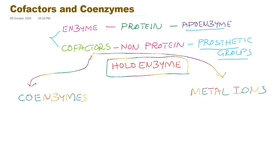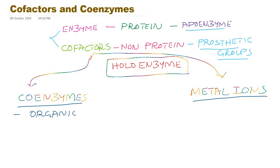Don't confuse coenzymes and cofactors. Coenzymes are also cofactors; even metal ions are also cofactors. These cofactors enhance enzymatic reactions or enzyme-catalyzed reactions. Usually coenzymes are organic components whereas metal ions are inorganic.